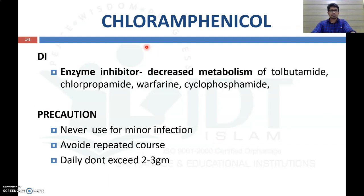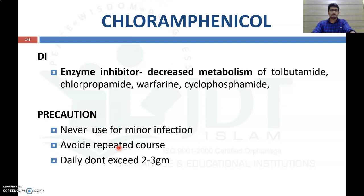Regarding drug interactions: since chloramphenicol is an enzyme inhibitor, it decreases the metabolism of drugs like tolbutamide, chlorpropamide, warfarin, and cyclophosphamide when used concurrently, thereby increasing their plasma concentration and risk of toxicity. Precautions include: it should not be used for minor infections, repeated courses should be avoided, and the daily dose should not exceed 2–3 grams.